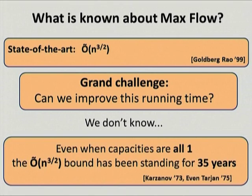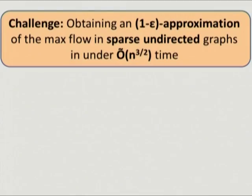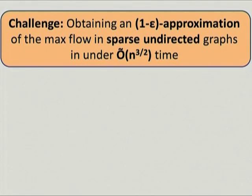It's even slightly worse: if you focus on the baby case where all capacities are equal to one, the bound of n to the three-halves was already known for 35 years and is still standing. So we are a bit stuck. Once we realized this as a community, one of the challenges that emerged—understood as a first step toward the grand challenge—is trying to solve the maximum flow problem approximately, with approximation 1 minus epsilon, and only for undirected graphs.